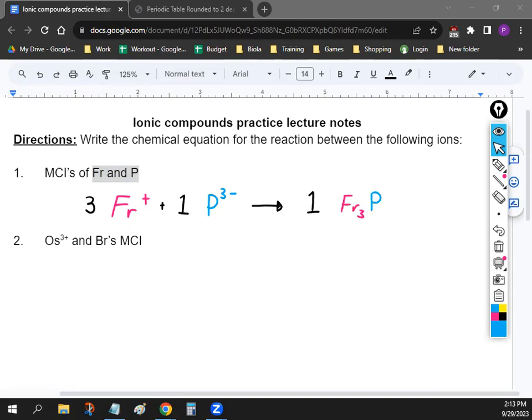Alright. So let me give you guys about three minutes. See if you guys can do number two with the person next to you. The cation is Os three plus, I'm going to write it a little bit bigger for you. And then the other, the anion is Br and you got to find the MCI. So take about three minutes, find the MCI for Br and see if you can finish up the rest of that equation. And then we'll go over it and then we'll be all done.